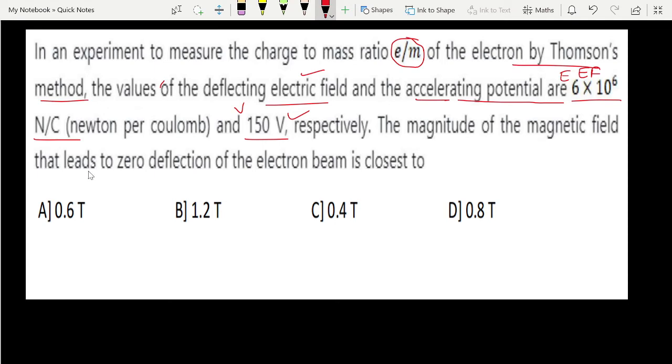Next, the magnitude of magnetic field that leads to zero deflection of the electron beam is closest to. So this is a very good question. Zero deflection means what is happening? Remember the concept of velocity selector. The concept of velocity selector is well known as when we have zero deflection, that means the velocities are placed in a particular ratio.